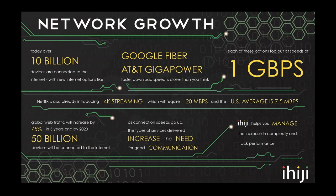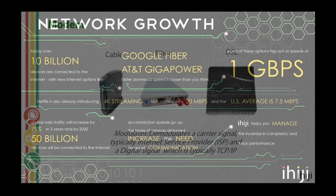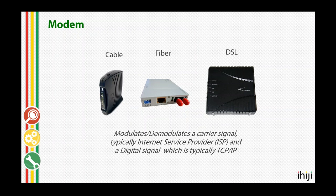When you look at the trends, things are going to get even more extreme. Today we have about 10 billion connected devices on the internet. By 2020 we're expected to see 50 billion — a four to five times increase in the number of devices you'll be supporting on your jobs. On top of that, gigabit internet services are coming — 1,000 megabits per second to the home, enabling services like 4K streaming, which requires at least 20 megabits per second per stream.